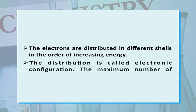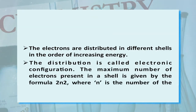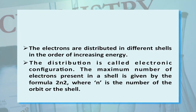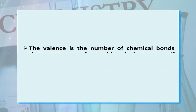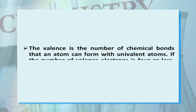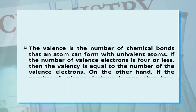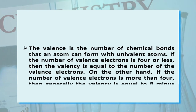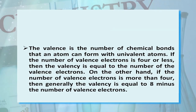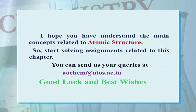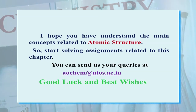The distribution of electrons in different shells in order of increasing energy is called the electronic configuration. The maximum number of electrons in a shell is given by the formula 2n², where n is the number of the shell. Valency is the number of chemical bonds an atom can form with univalent atoms. If the number of valence electrons is 4 or less, valency equals the number of valence electrons; if more than 4, valency equals 8 minus the number of valence electrons. I hope you have understood the main concepts of atomic structure. Start solving assignments related to this chapter, and you can send us your queries at aochem@nios.ac.in. Good luck and best wishes.